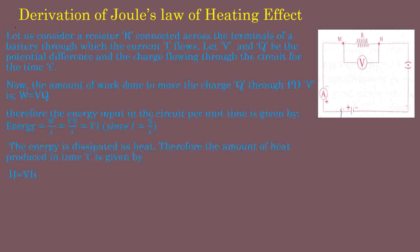The energy is dissipated as heat, and the amount of heat produced in time T is given by H equal to VIT — that is power multiplied by time. According to Ohm's law, V equals IR, so substituting IR for V we get H equal to I²RT. This relation is called Joule's law of heating effect of electric current.